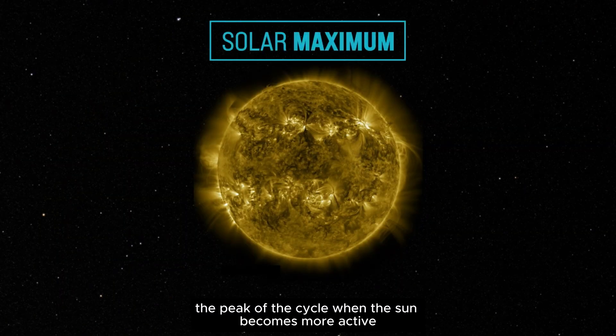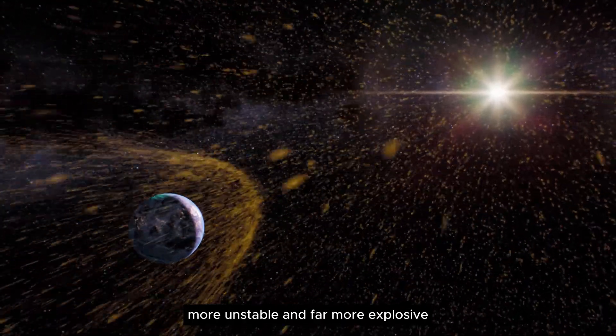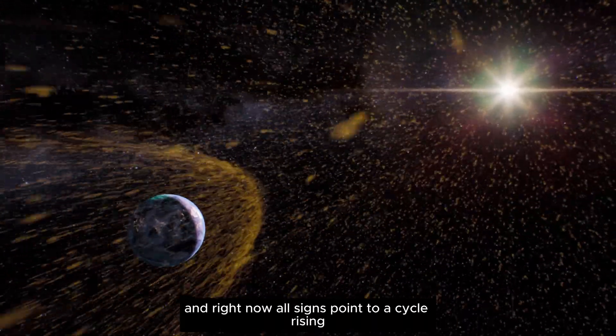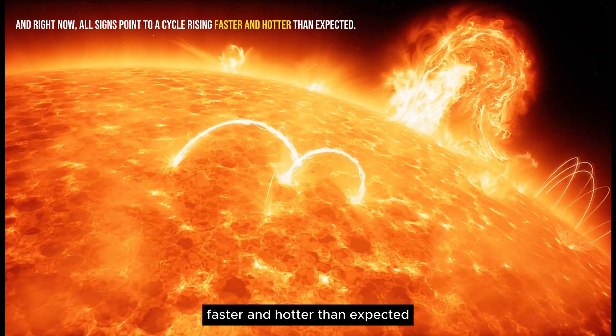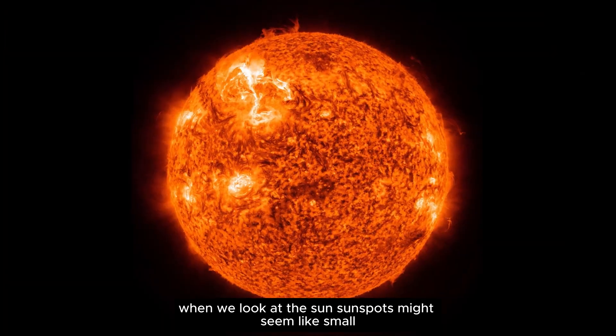the closer we are to solar maximum. The peak of the cycle, when the sun becomes more active, more unstable, and far more explosive. And right now, all signs point to a cycle rising faster and hotter than expected.